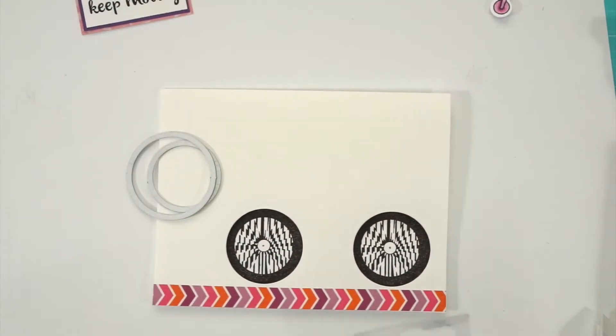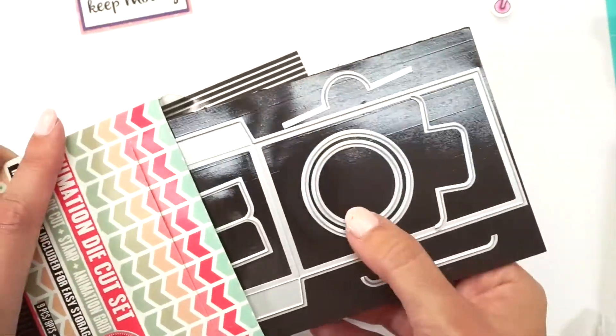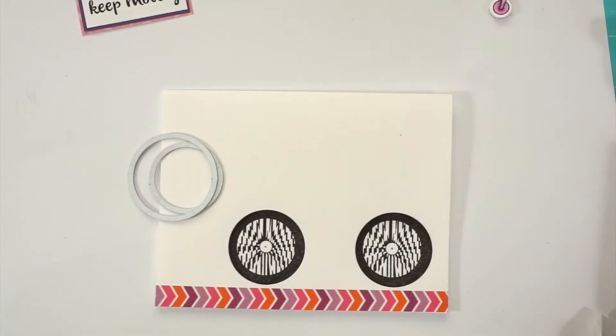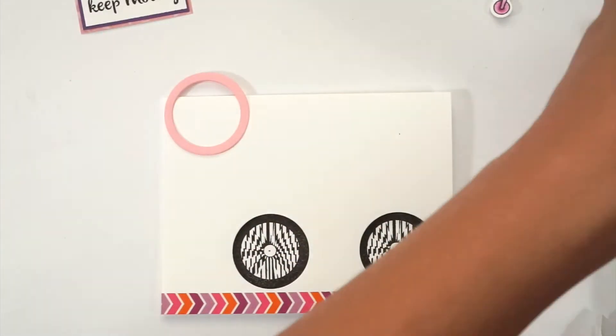Now that you have the wheels ready, you can leave them like that. Or if you have this set, DC 104, that is for the small envelope. I like to use both circle die cuts that come in the set and it makes a perfect rim for the bicycle wheels. I love that.